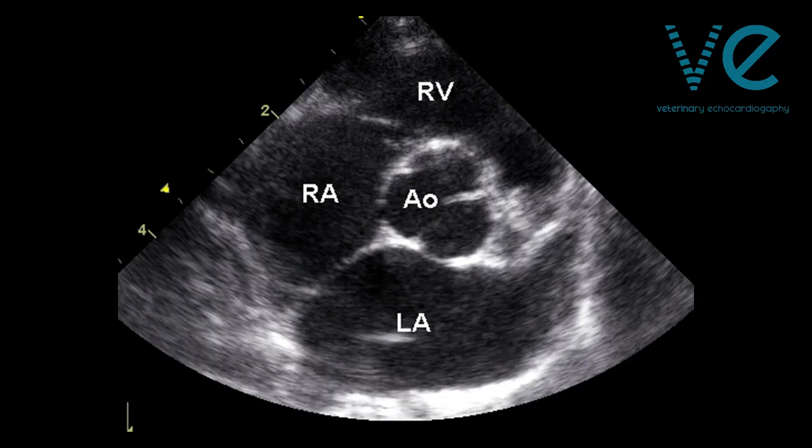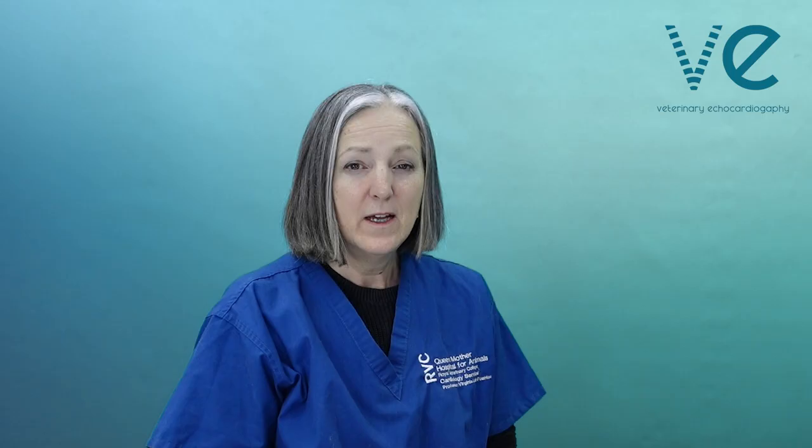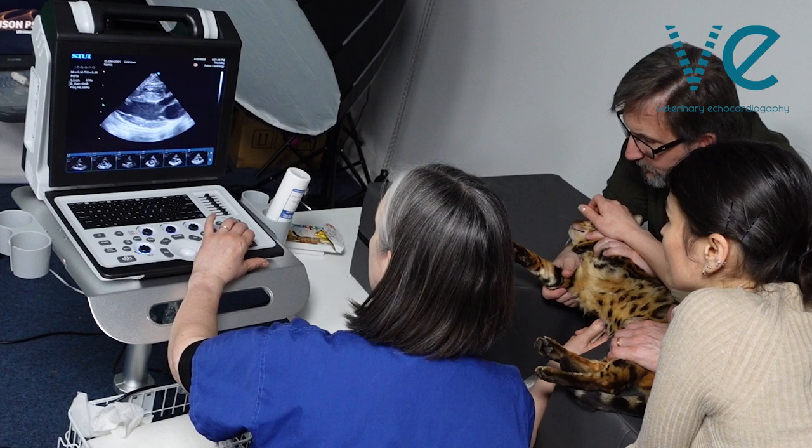There are a couple of ways you can assess left atrial size, and probably the one I use most is a qualitative assessment looking at multiple views of the left atrium. The short axis, right parasternal short axis view at the aortic valve level gives you a nice comparison between left atrial diameter and aortic diameter to decide whether the left atrium is enlarged. But actually in cats, we probably use just as much the long axis view looking at the shape of the left atrium.